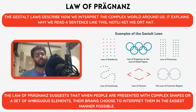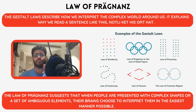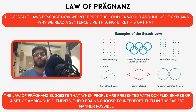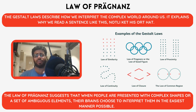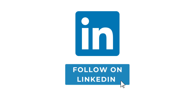Prägnanz is a useful law to keep in mind during UI/UX design and also during wireframing. Given that our eyes assemble blocks of elements into a single page, we should aim to make shapes and forms accessible to the human brain that is constantly trying to reduce the cognitive load. Fundamentally, we should create designs that are easy to perceive at first glance. Thank you for watching.